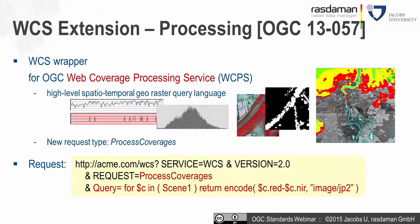The processing extension introduces a new request type: ProcessCoverages. We address our WCS, set the request to ProcessCoverages, and pass the query as a string value. For example, we bind a variable $C to coverage C1 and compute the difference between the red and near-infrared channel, encoding the result in JP2 (JPEG 2000) and returning it to the caller. The query is evaluated on the server and the response is a set of images or aggregate values.